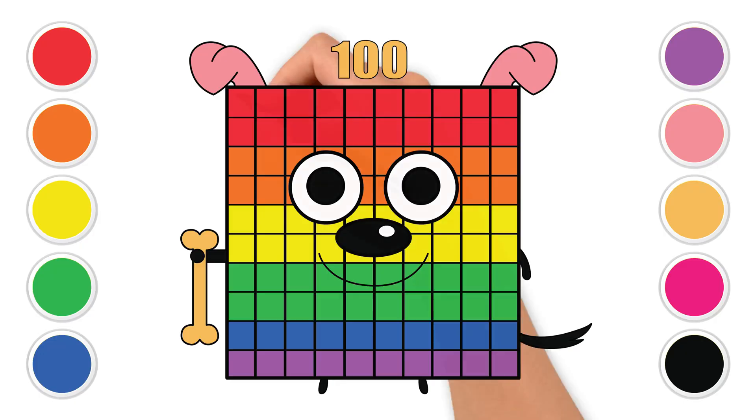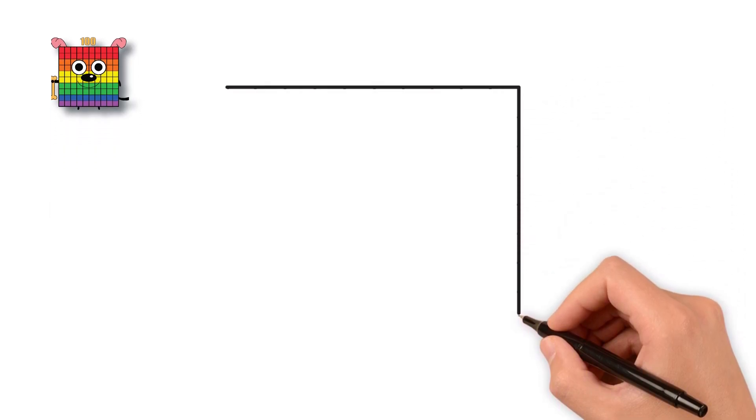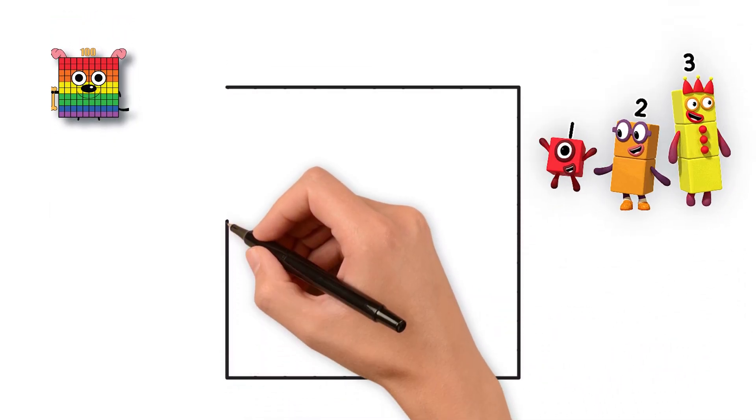He's rainbow-colored, blocky, and super fun. Start with a big square. This will be his body.